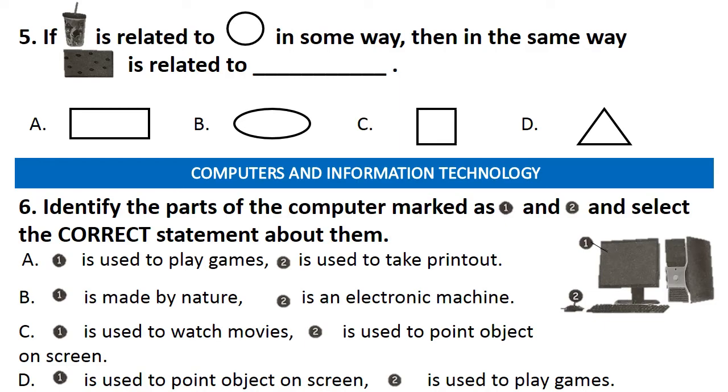If a glass is related to circle in some way, then in the same way, I think it is an image of a biscuit, is related to dash. Answer is option A. As we can draw a circle with the help of a glass, similarly we can draw a rectangle with the given image.